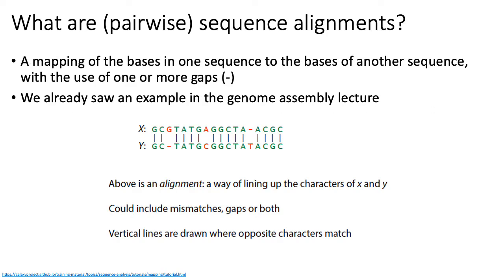A pairwise sequence alignment is, formally speaking, just a mapping of bases from one sequence to another sequence with the use of one or more so-called gap characters. We already saw examples of alignments in our Genome Assembly lecture. Here I'm showing you an example alignment between two sequences, X and Y, where a vertical bar shows the mapping between identical bases between the two sequences.